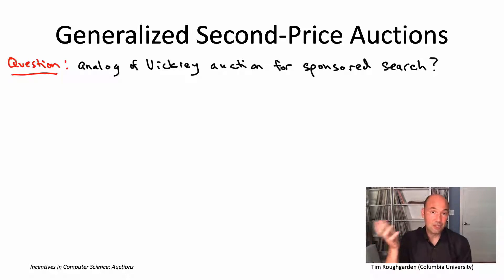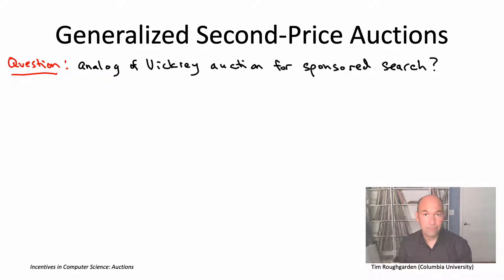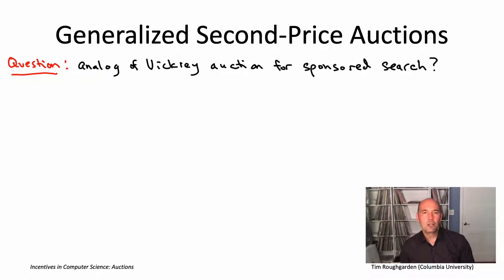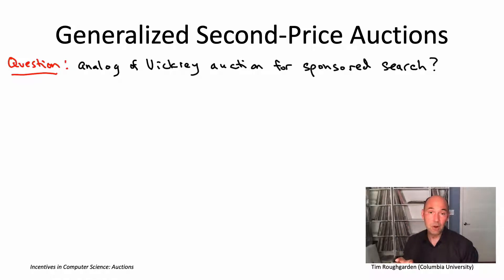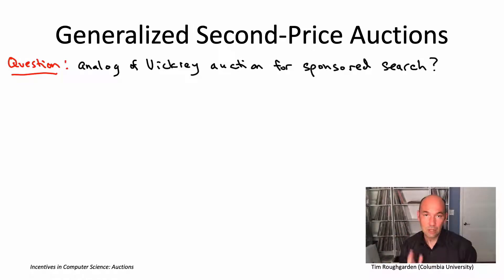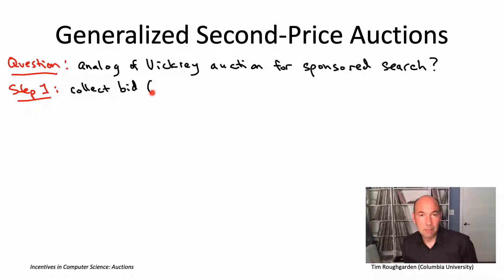I also want to tell you how these things actually work in practice. Like a Vickrey auction, we're going to be looking for a sealed bid implementation. These are auctions happening super quickly in real time — there's not going to be some auctioneer and an ascending auction. You really want a one-shot sealed bid auction where advertisers submit their bid through some interface to the search engine, and then you can instantaneously run an auction. So step one, a sealed bid auction: you collect the bids. Same thing as in the Vickrey auction.